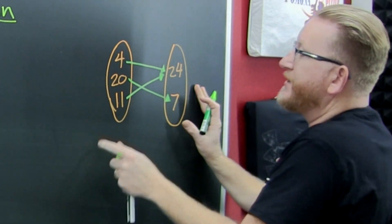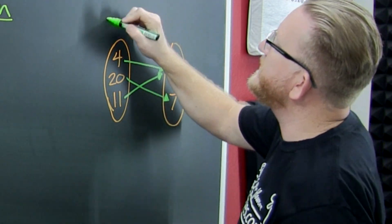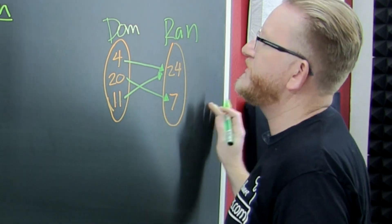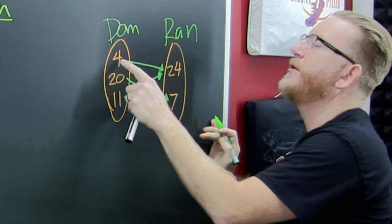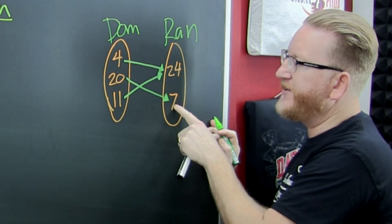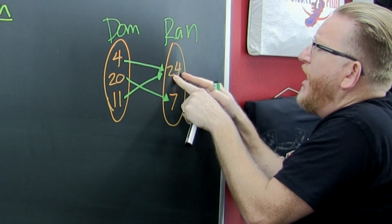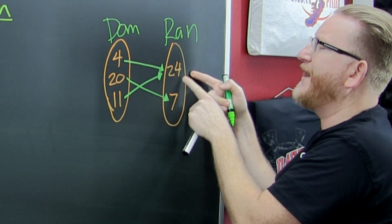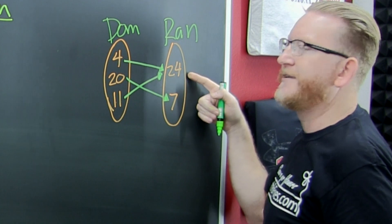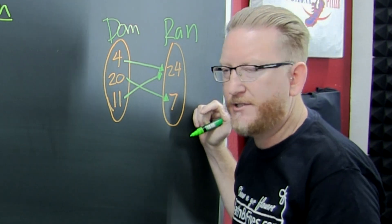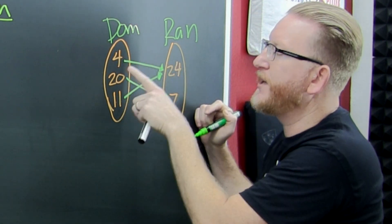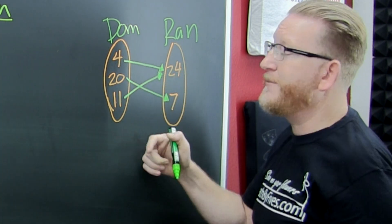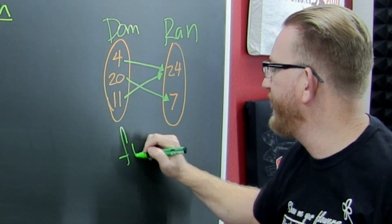Sometimes they give it to you in these bubbles and they list the domain and the range — they did that part for you. So 4 goes to 24, 20 goes to 7, and 11 goes to 24. 24 gets two domain elements, but does that make it a function? It's still a function, because each first element corresponds to exactly one second element. The second element can get as many first elements as they want. So this one is fun!